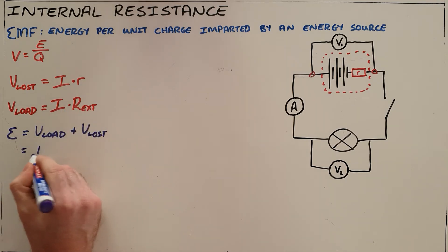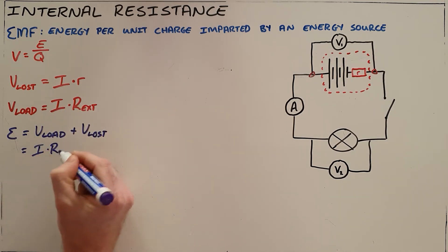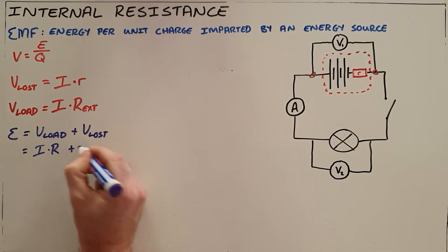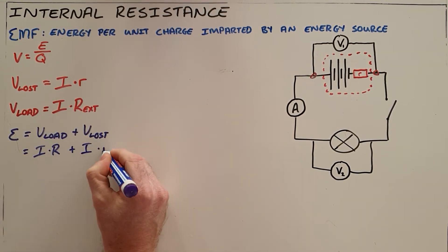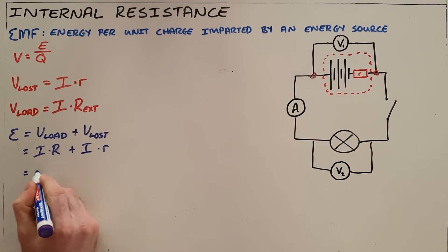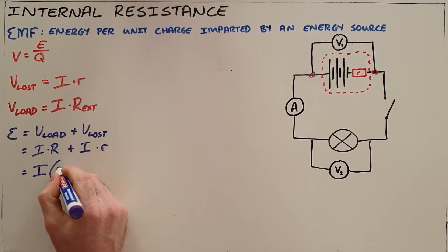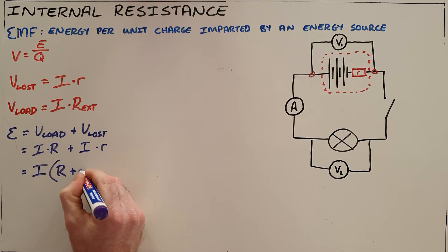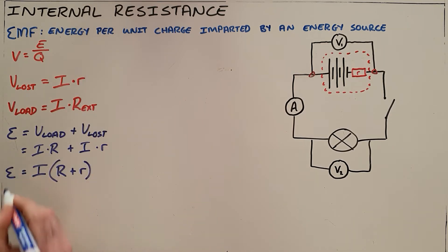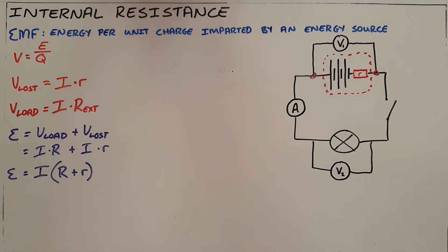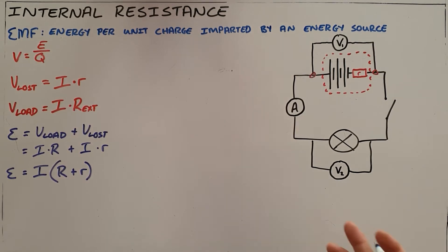We can simplify this: the load voltage is I times R_external, and the lost volts is I times R_internal. This gives us the equation for circuits containing an internal resistance: EMF (ε) equals I multiplied by the sum of R_external plus R_internal.